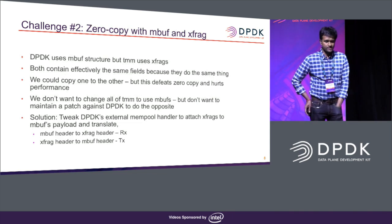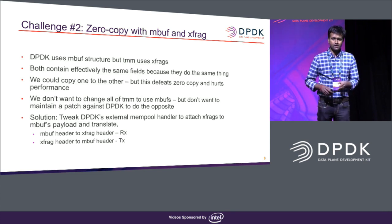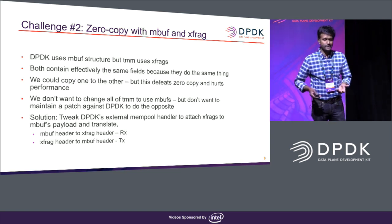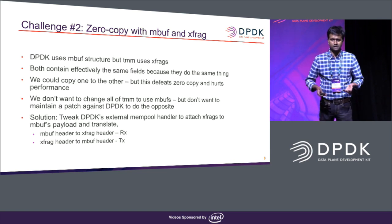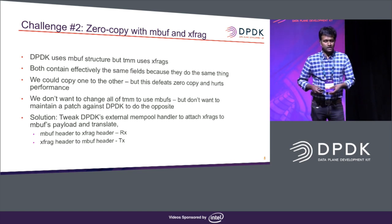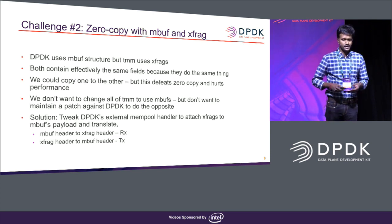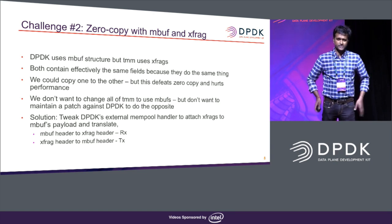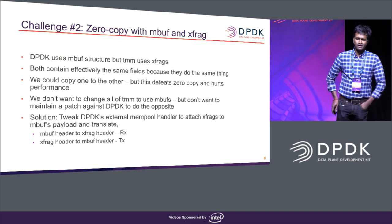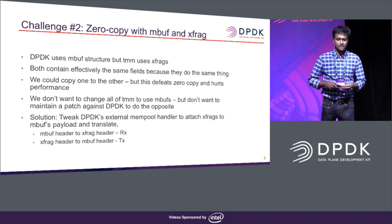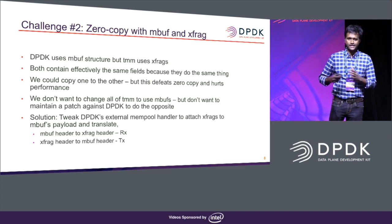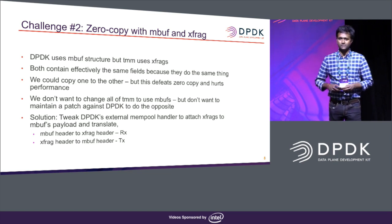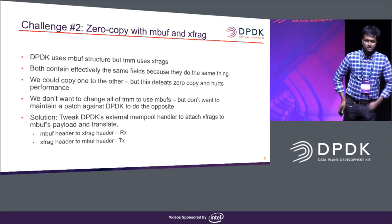The next challenge was how we achieved zero copy while retaining our in-house packet structure — the xfrag — while DPDK uses mbufs. We retained it such that DPDK continues to use mbufs and TMM continues to use xfrags. The way we did it is by tweaking the external mempool handler that DPDK introduced around version 16.04 or 17.05. Using the external mempool handler, we attach the xfrags allocated by TMM onto the mbuf's payload. We make the mbuf's buffer pointer point to the xfrag, and then pass it on to DPDK. This way, the actual DMA happens to TMM's xfrag memory area.